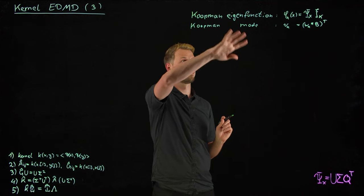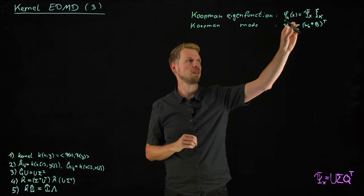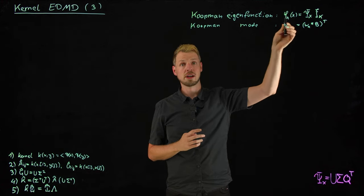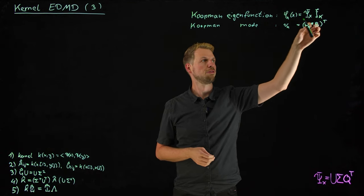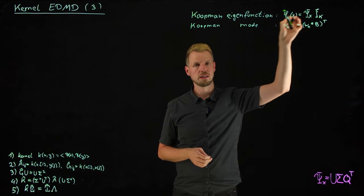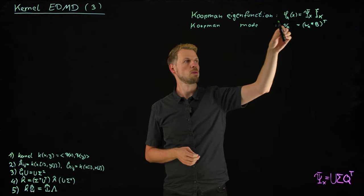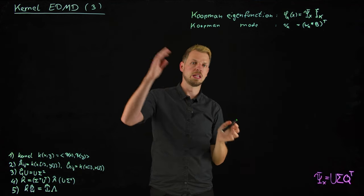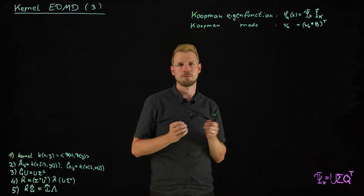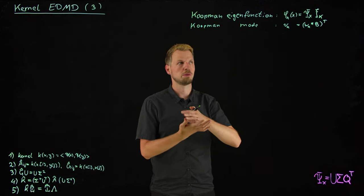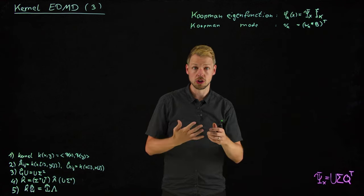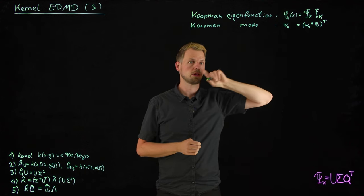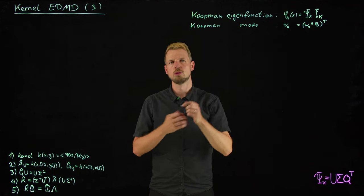There is one exception. If we want to lift our data later on to compute these Koopman modes, then we have to actually go to this high-dimensional space. This psi x should only be the full state observable if we want to study the Koopman modes. We will see this in the code example later as well. But before we do this, let's now derive this in a little bit more detail.